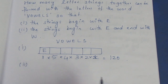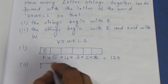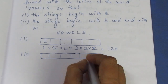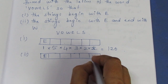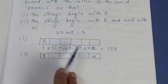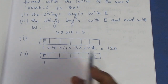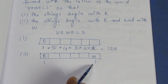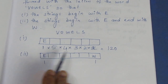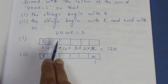For the second condition, the string begins with E and ends with W. So we fix E in the first box and W in the last box. That accounts for 2 positions. Now we fill the remaining balance letters in the middle boxes.